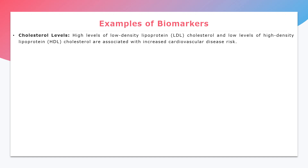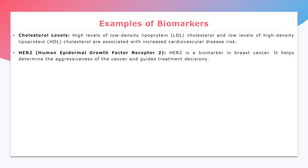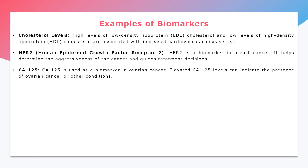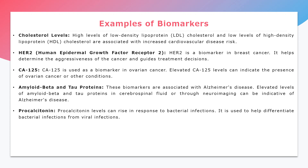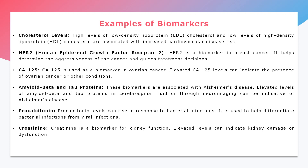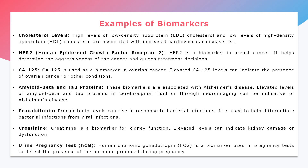Cholesterol level — especially LDL — is a good biomarker for cardiovascular disease. HER2 (human epidermal growth factor receptor 2) is a biomarker for breast cancer that helps determine the aggressiveness of the cancer. CA-125 is a biomarker for ovarian cancer — elevated CA-125 levels indicate the presence of ovarian cancer. Amyloid beta and tau proteins are biomarkers for Alzheimer's disease; elevated levels in cerebrospinal fluid and neuroimaging findings can be indicative of the disease. Procalcitonin rises in bacterial infections and can differentiate between bacterial and viral infections. Creatinine, a byproduct of creatine or creatine phosphate metabolism, is a biomarker for kidney damage. Finally, HCG (human chorionic gonadotropin) in a urine pregnancy test is a biomarker detecting the presence of the hormone during pregnancy.